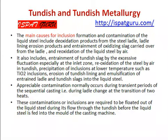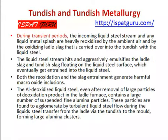Significant contamination normally occurs during transient periods of the casting sequence — during ladle change and at the transition of heats. These contaminations or inclusions are required to be floated out of liquid steel during its flow through the tundish before the liquid steel is poured into the mold of the casting machine. During transient periods, the intermittent liquid steel stream and any liquid metal exposed surfaces are heavily reoxidized by the ambient air and by the oxidizing ladle slags that are carried over into the tundish. The liquid steel stream aggressively emulsifies the ladle slags and tundish slags floating on the liquid steel surface, which eventually get entrained into the liquid steel.